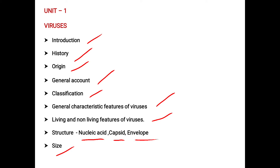Next, the capsid — also called the protein coat. The nucleic acid core is enclosed by a protective protein sheet called the capsid. The capsid consists of several identical protein subunits called capsomers.